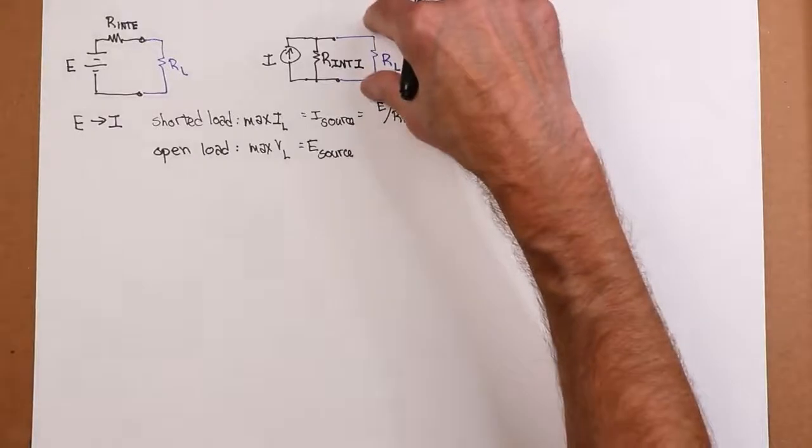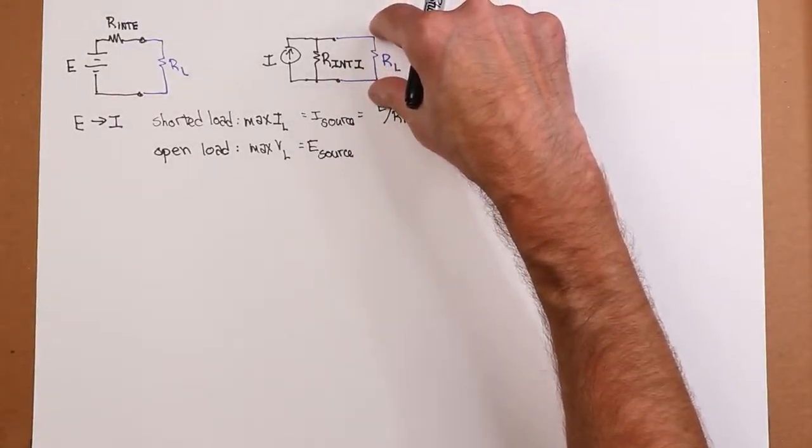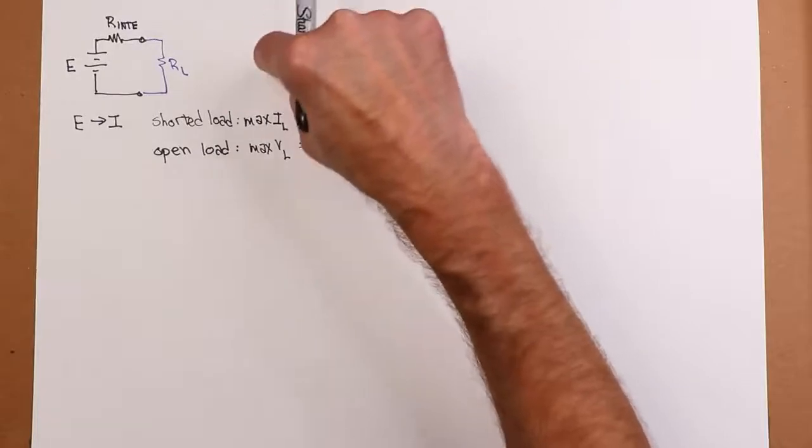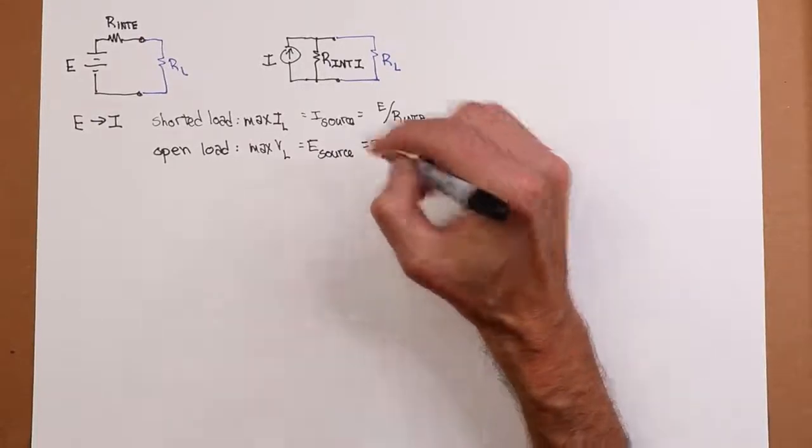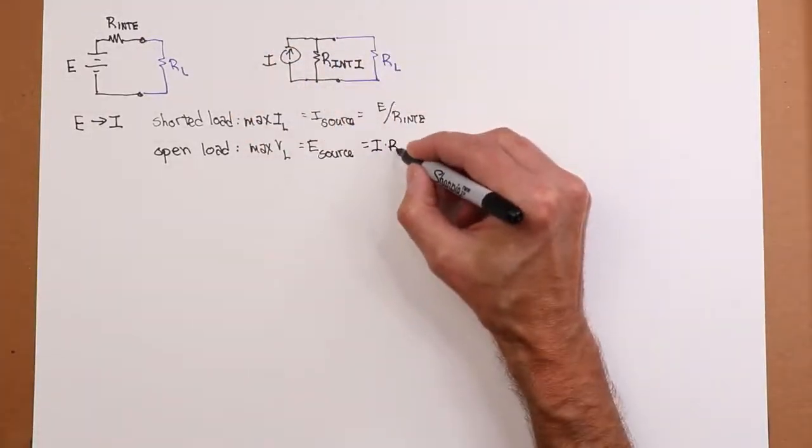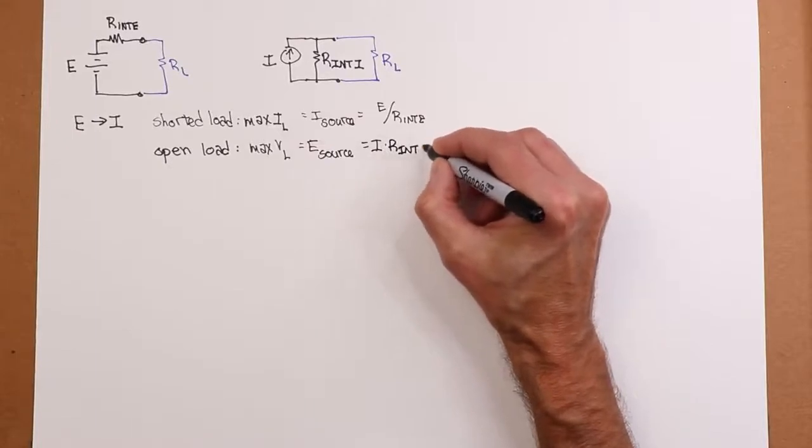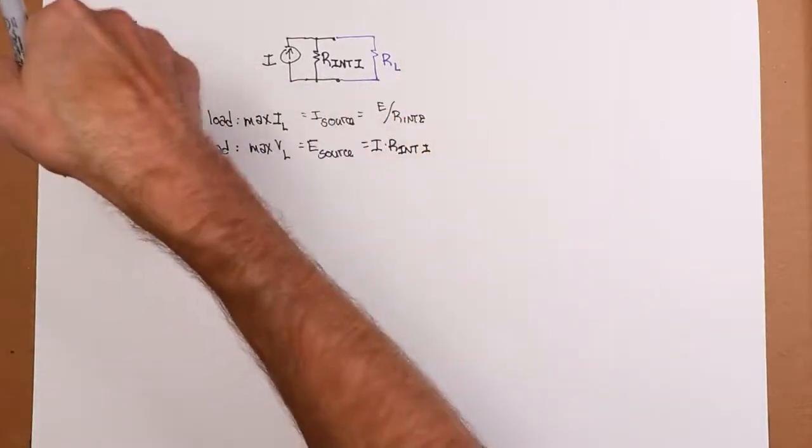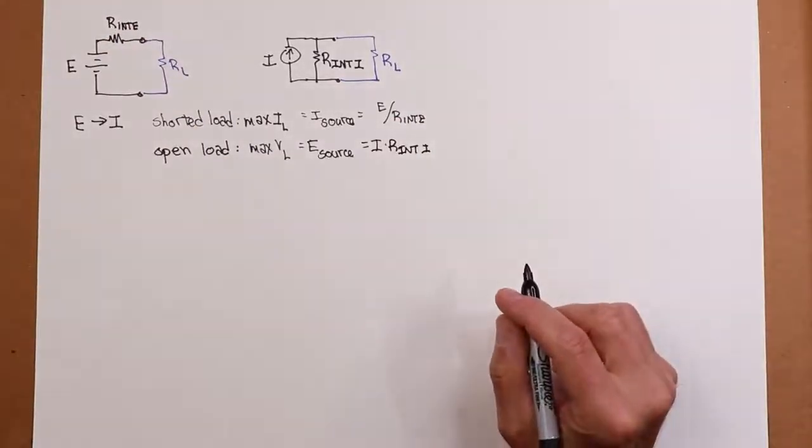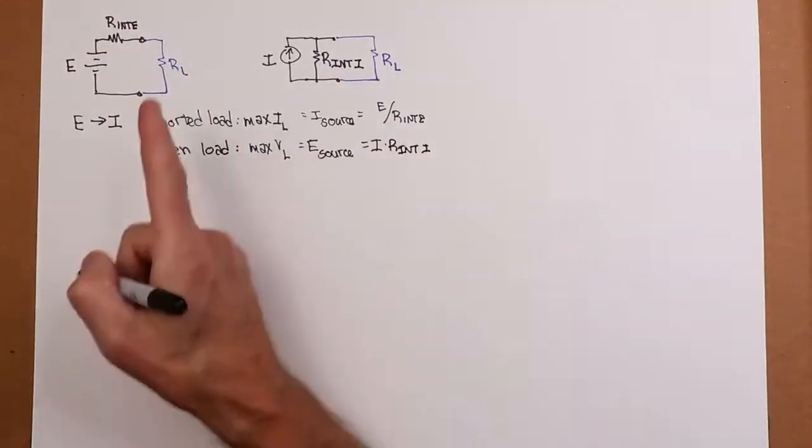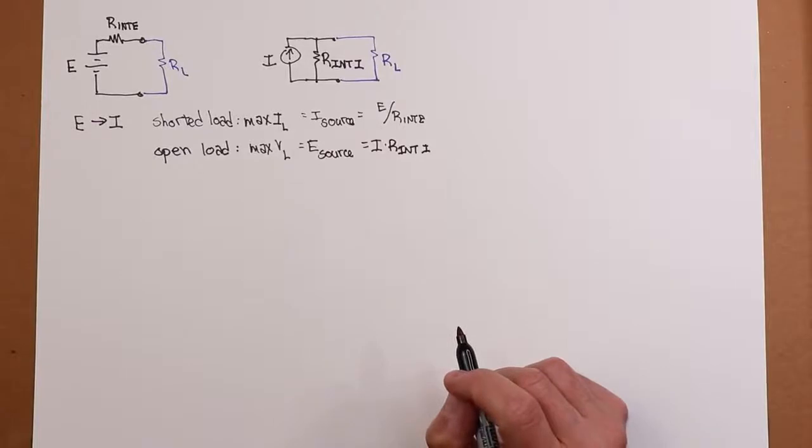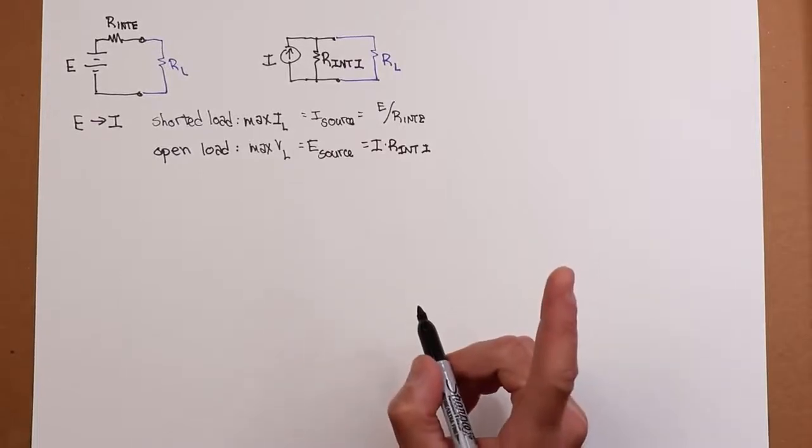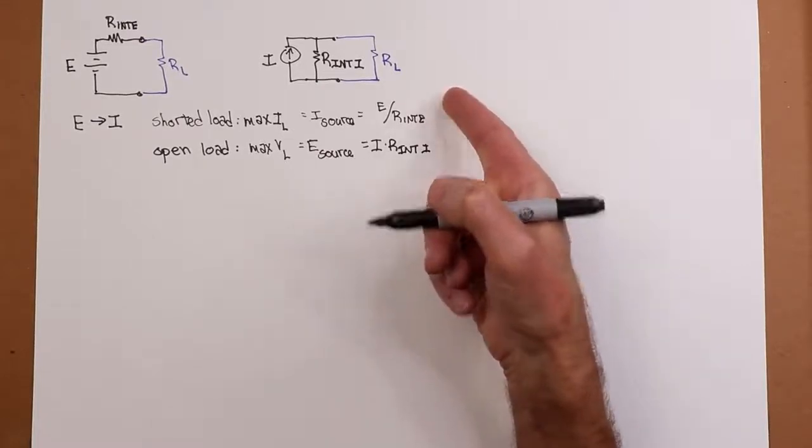So I'm supposed to get the same thing out here. When I open the load out here, well what happens? All of this source current, if this is open, has to flow through R internal. In other words, this times R internal I has to equal my original E source. But I know the source current has to equal E divided by R internal E. You see where we're going here? So if I plug this in back to here, E source would have to equal E divided by R internal E, that's I, times R internal I.